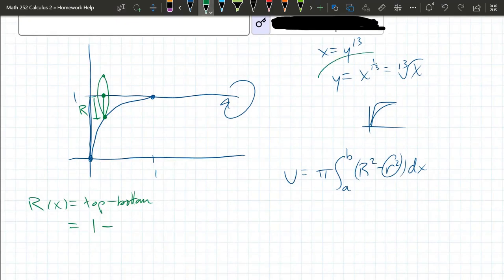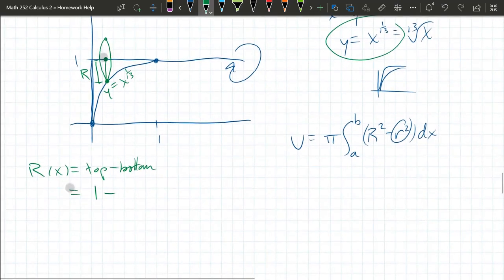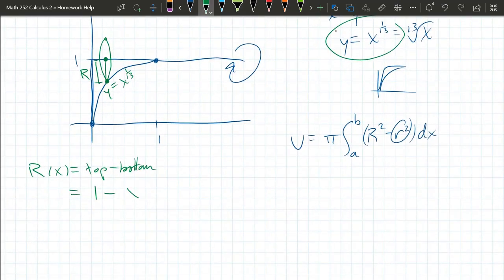It needs to be a function of x. So we need to write it as y equals x to the 1/13th power. And that's going to be the bottom. All right, that's big R of x.